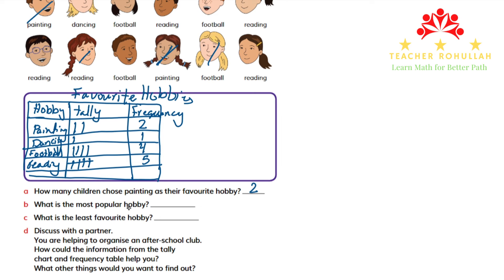Option B asks: what is the most popular hobby? The most popular is the one chosen by the most students, and that is reading. Option C asks: what is the least popular hobby? The least popular is the one chosen by the fewest students, and that is dancing.